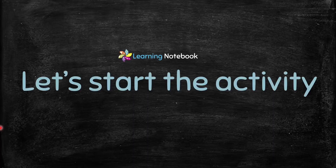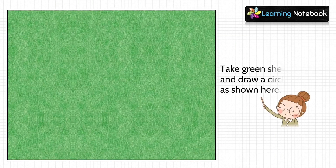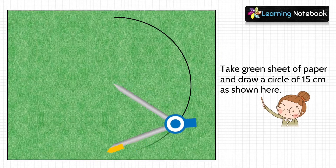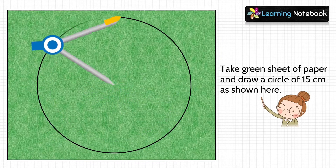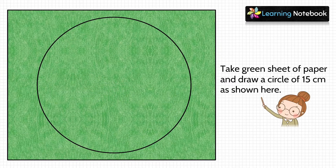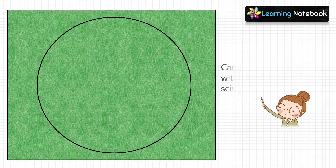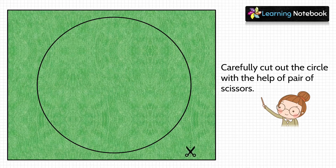Now let's start with our activity. In the first step, take the green sheet of paper and draw a circle of 15 centimeters as shown here. Then carefully cut out this circle using a pair of scissors.